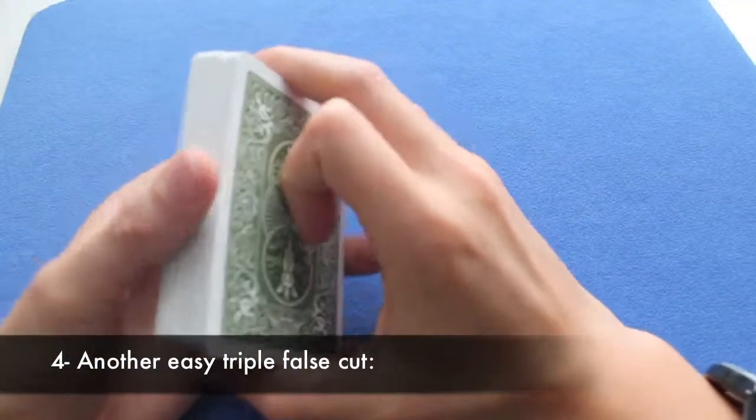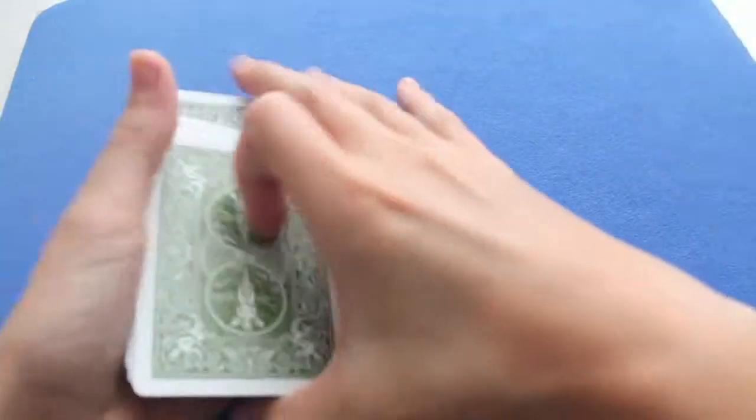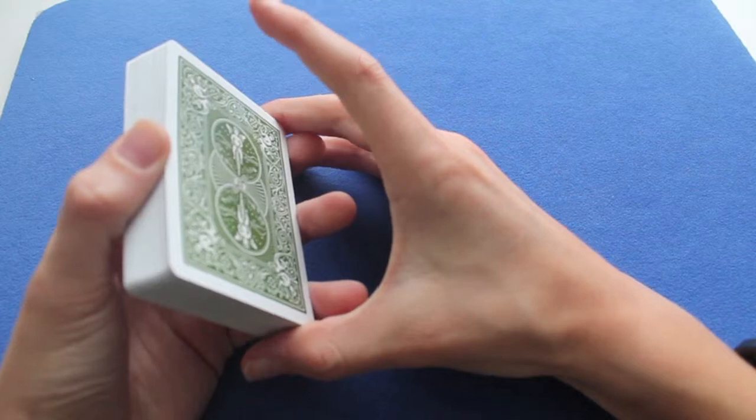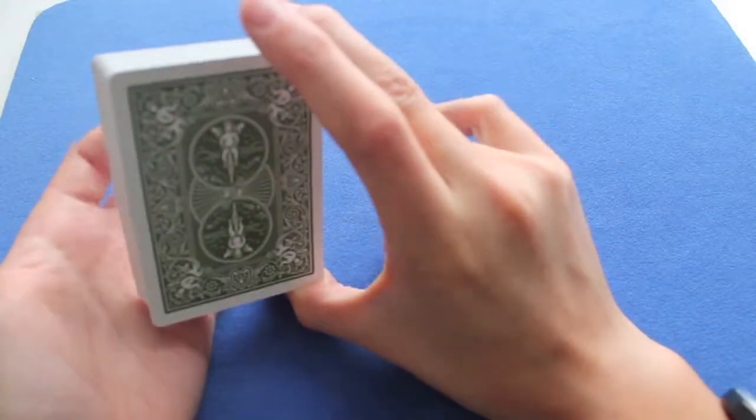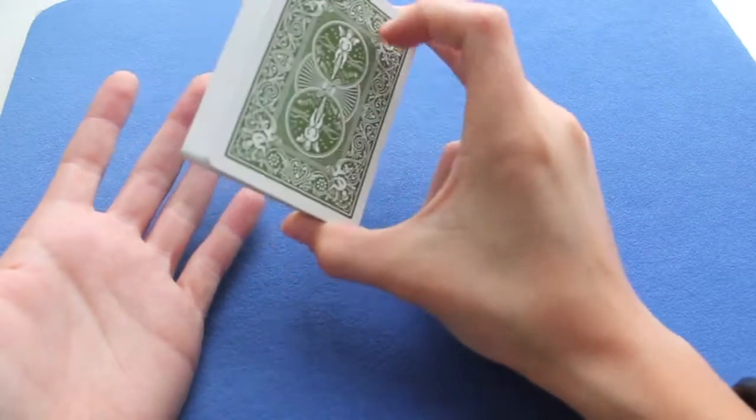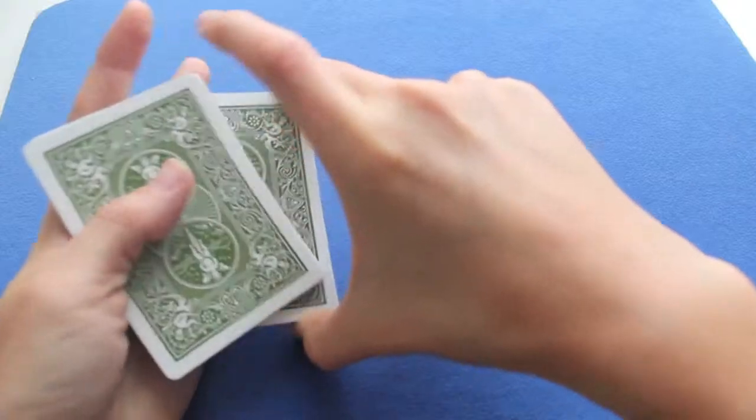So I'll show you another one, which is still quite easy. Looks like this. Really easy. So how does it work? This time, you hold it in biddle grip too, but without your first finger. Just second finger on the right, and your first finger is still hanging out. So you take a third of the cards like this. You swing cut.